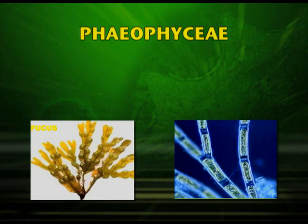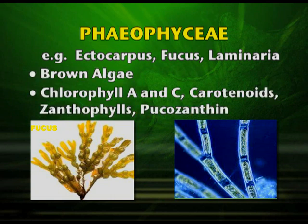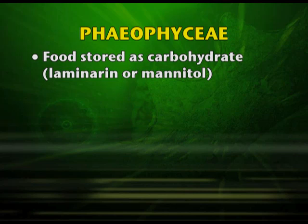Phaeophyceae includes organisms such as Ectocarpus, Fucus, and Laminaria. They are generally known as the brown algae and the chlorophyll present is A and C, as well as other pigments including carotenoids, xanthophyll, and fucoxanthin. The cell wall contains cellulose as well as algin. The food is stored as carbohydrate in the form of laminarin or mannitol.